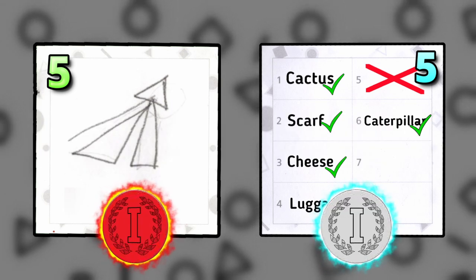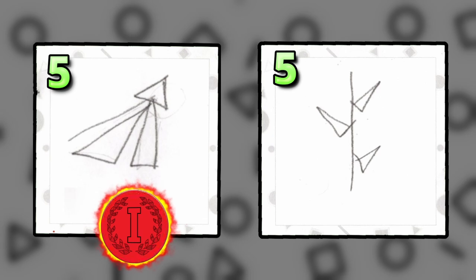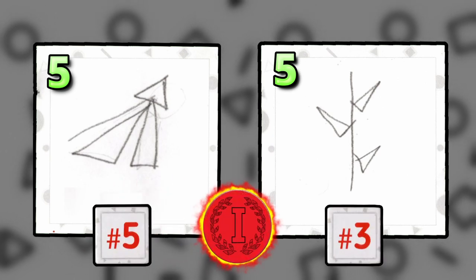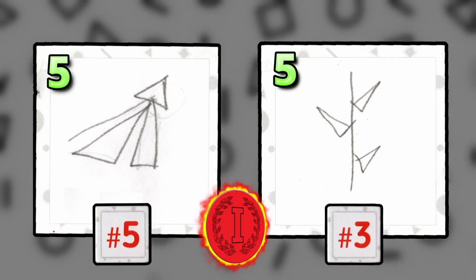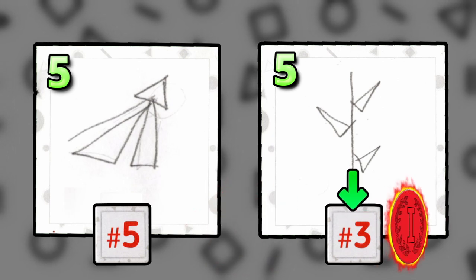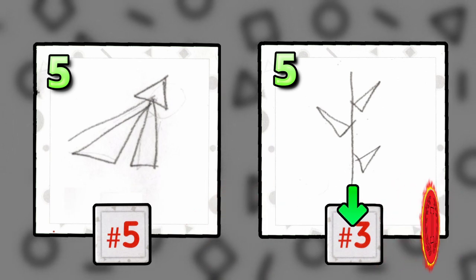In the case of a tie, say if these two drawings were correctly guessed by all the players, you then check their tokens to see who was the faster drawer out of the two. In this case, this person would win the point for that round, and that's one round of the game.